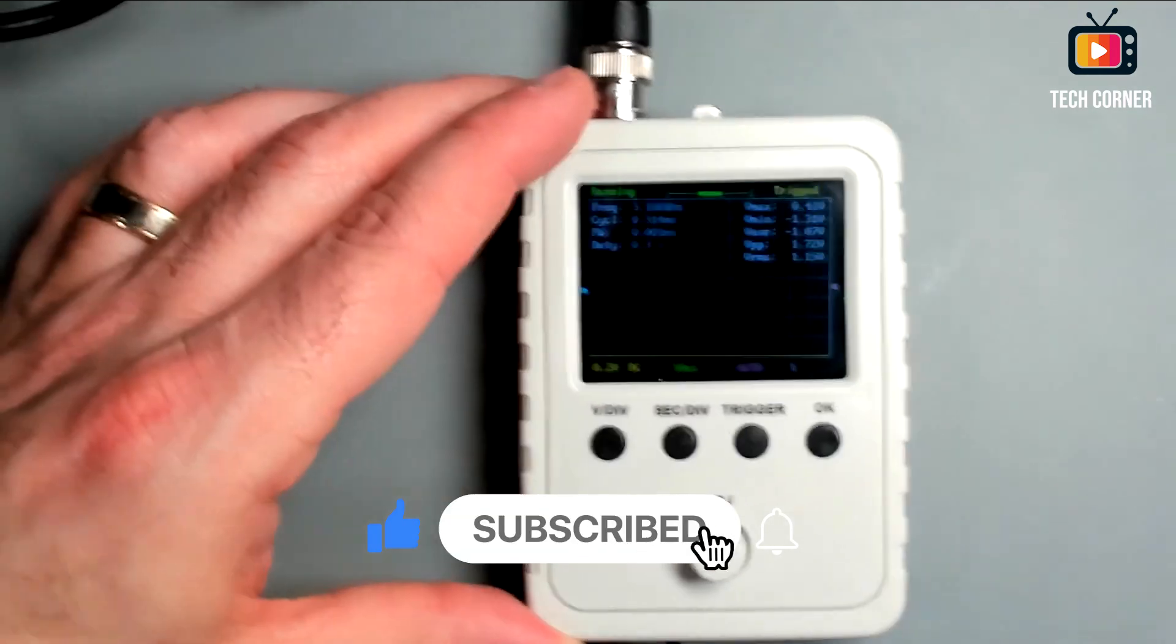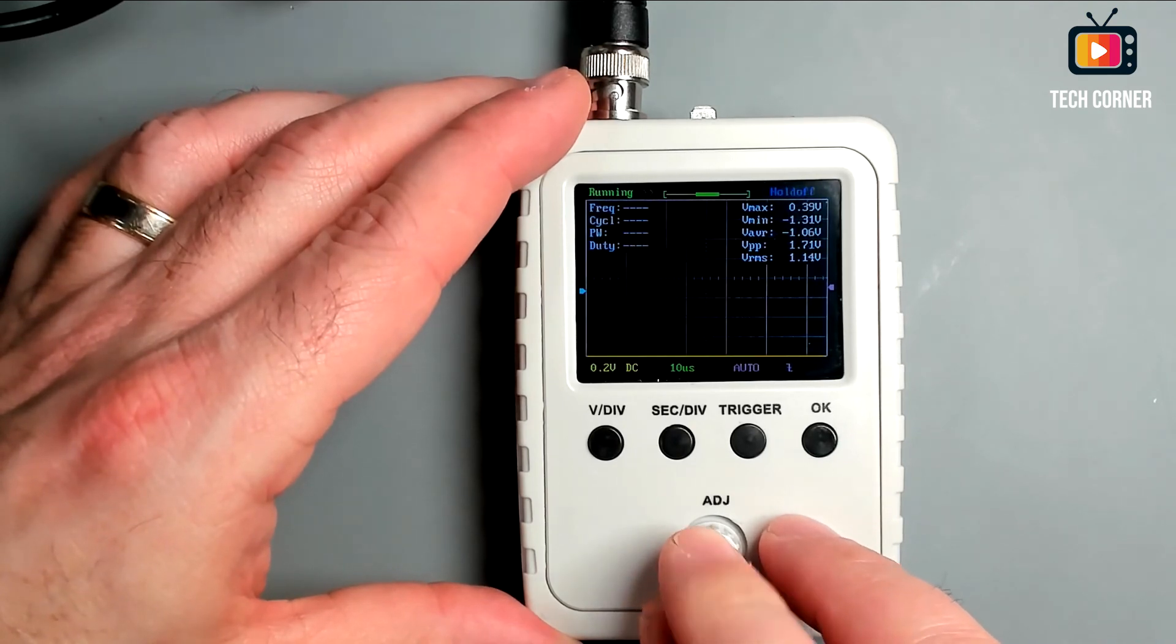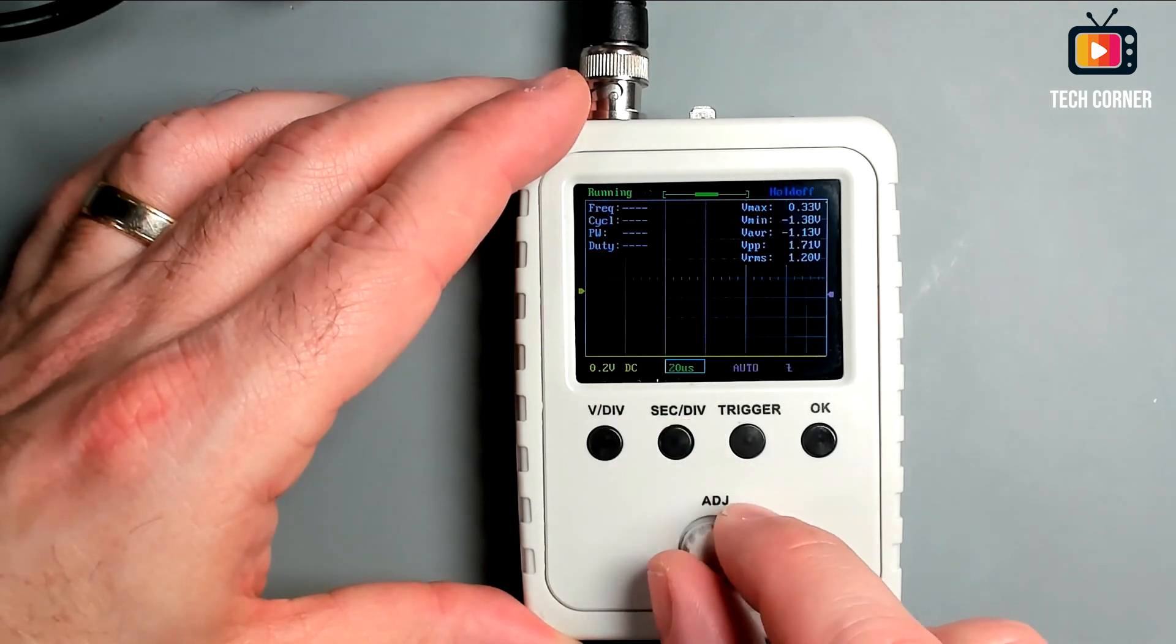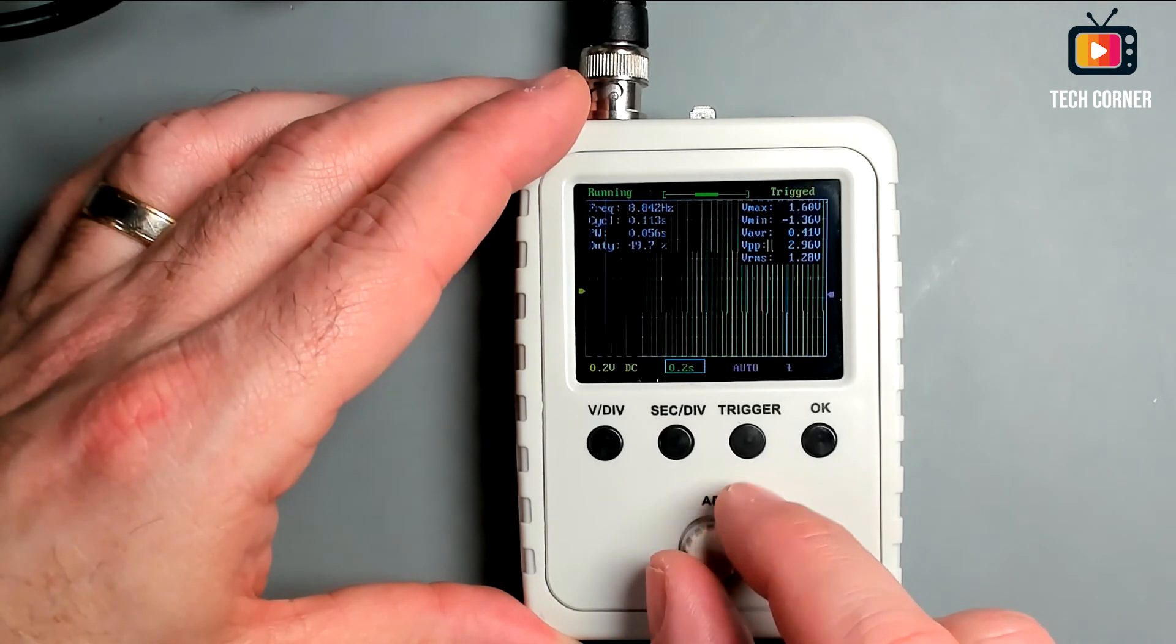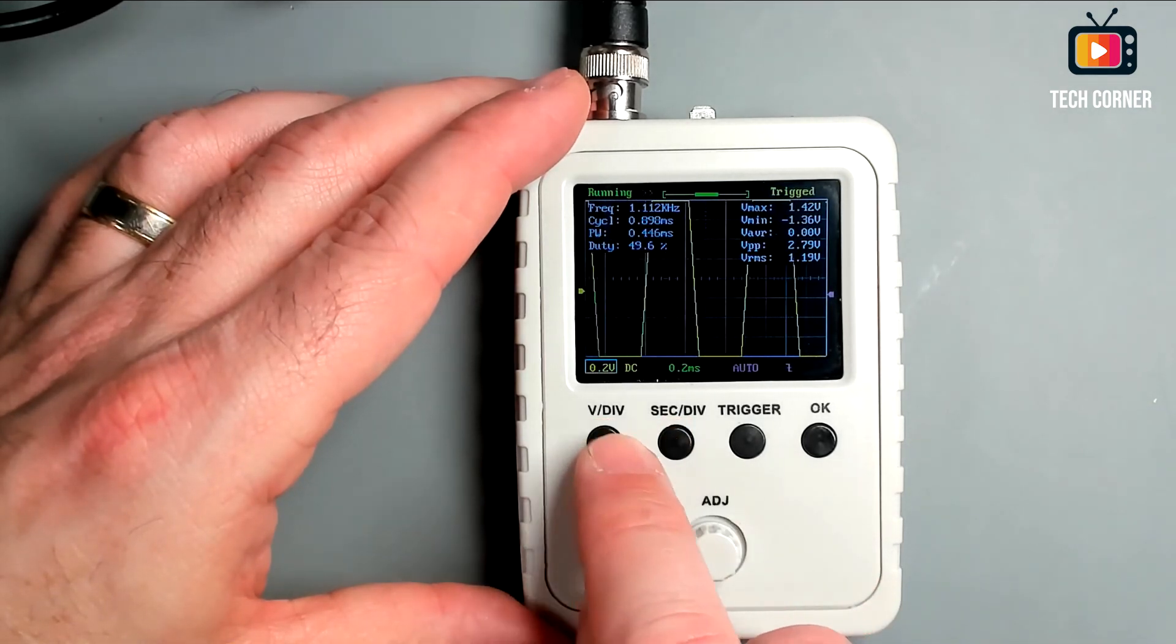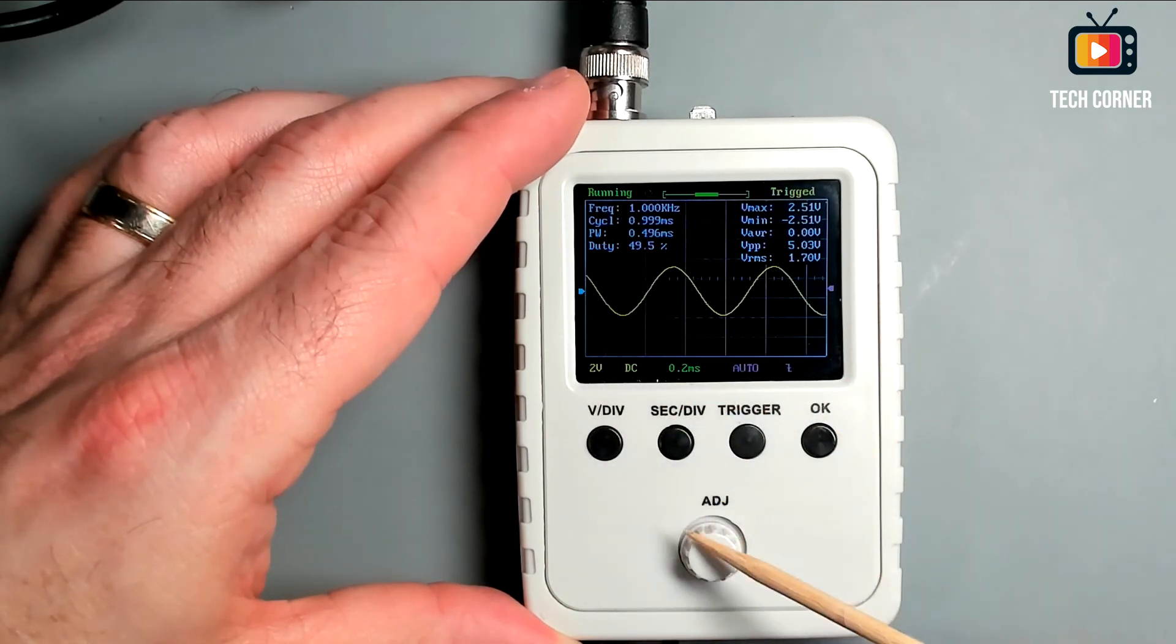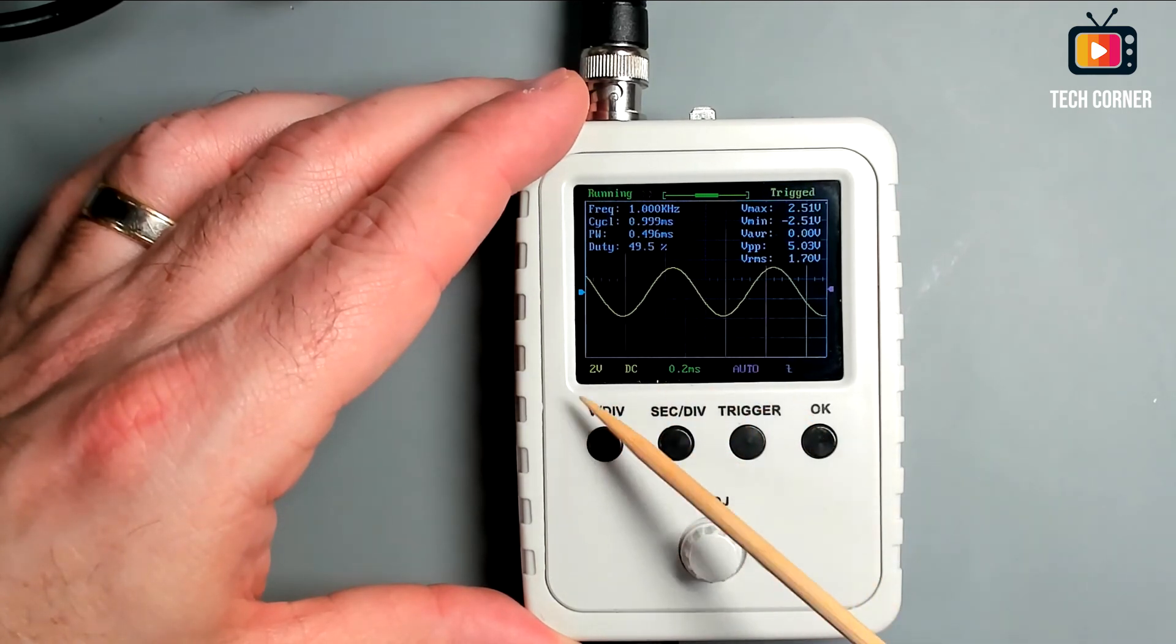Right now I'm going to turn the signal from the function generator on. Let me just fix here the voltage and the time base. We are getting the signal right now. Now we have here the signal. It's a sine wave as you may see.